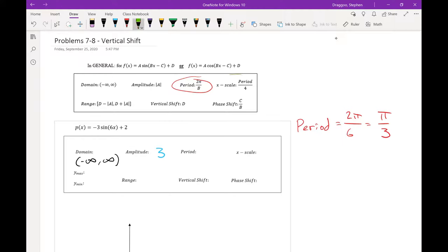The x scale remains the same. π over 3 divided by 4, which is π over 12.